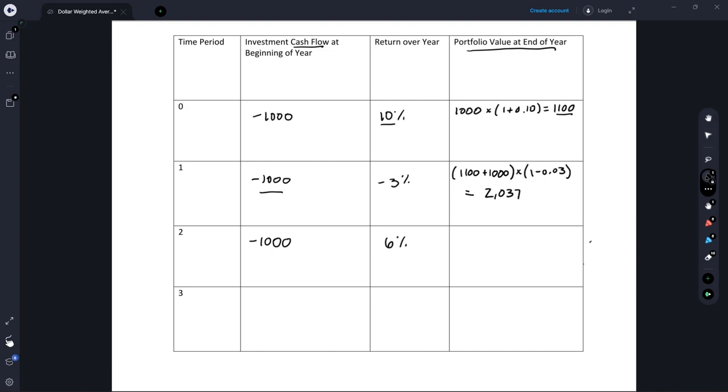Now we do this one more time, because we're going to contribute $1,000 to our portfolio. We have $2,037 already in there. And over the year, the portfolio is going to grow at 6%. So at the end of year two, beginning of year three, we're going to have a total portfolio value of $3,219.22. Let me fix that, because it grew at 6%. So 1 plus 0.06. And that is going to equal $3,219.22.